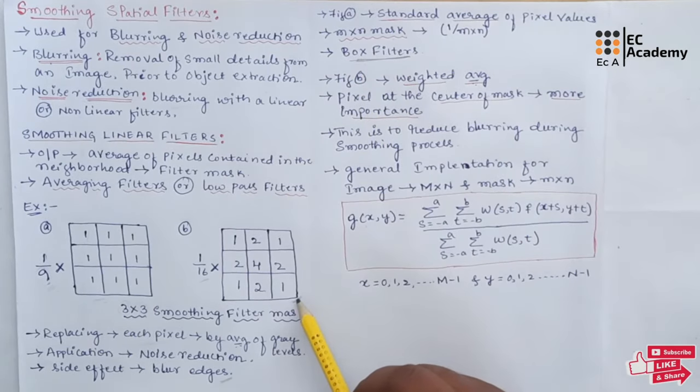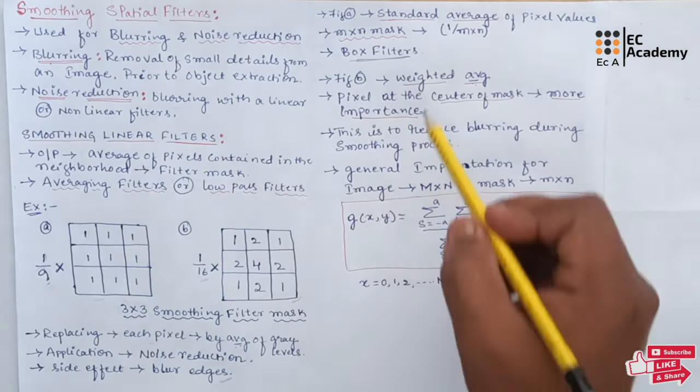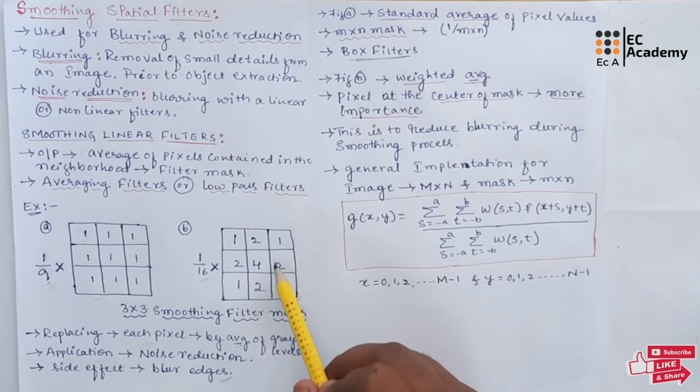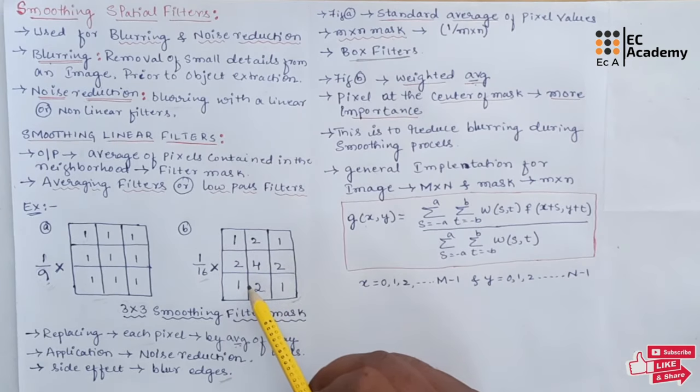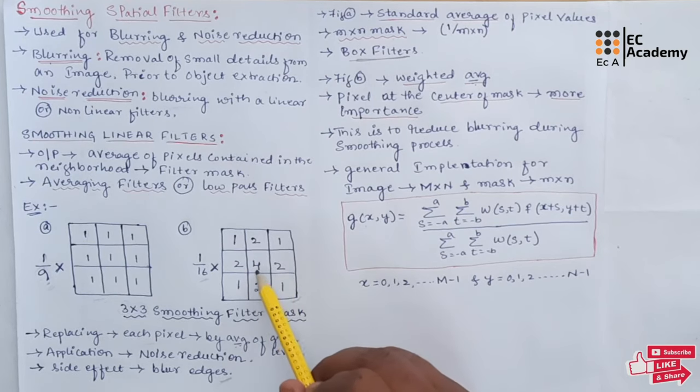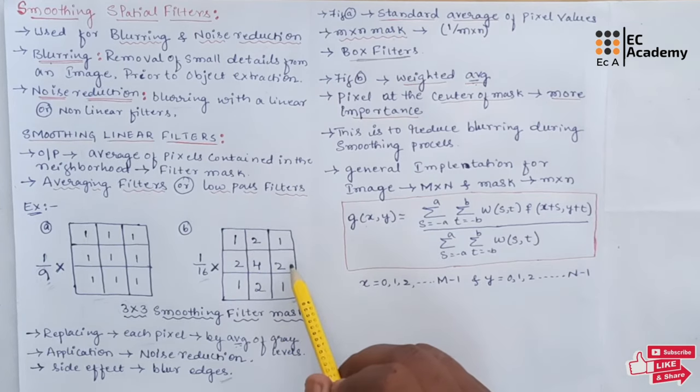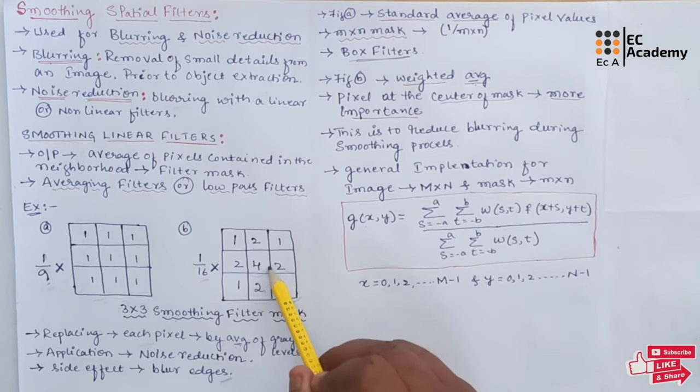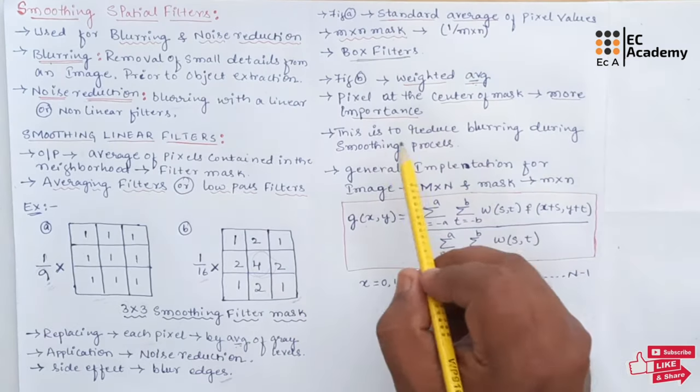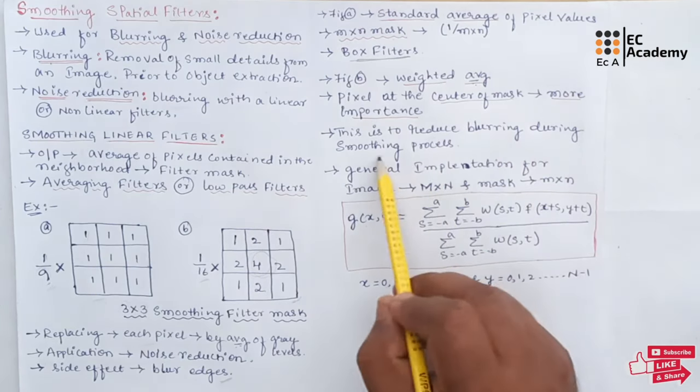Figure B is the example of weighted smoothing filter. This filter will produce the weighted average. Here, each pixel values are multiplied by different coefficients giving more importance to some pixels. The pixel at the center of the mask is multiplied by a higher value compared to the other pixel values. Hence, giving this pixel more importance in calculation of average. So, this strategy is used to reduce the blurring during the smoothing process.